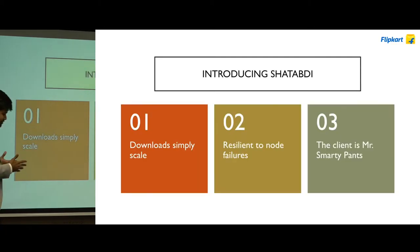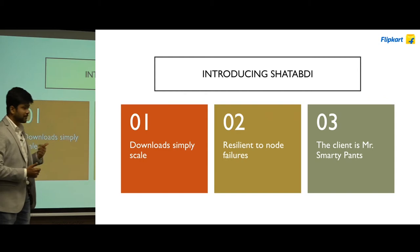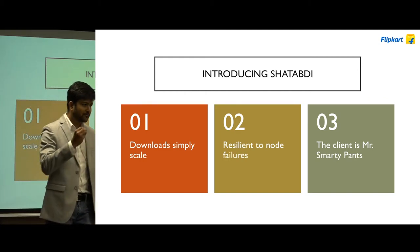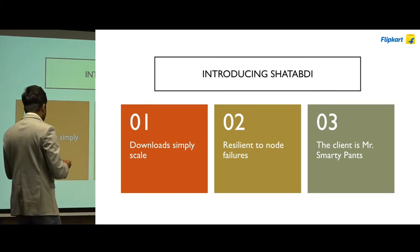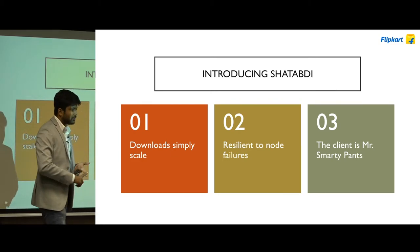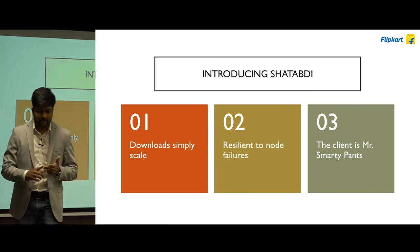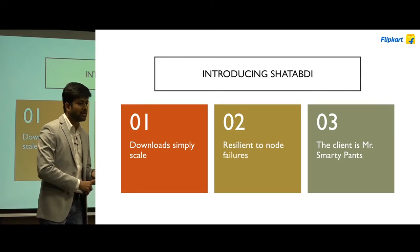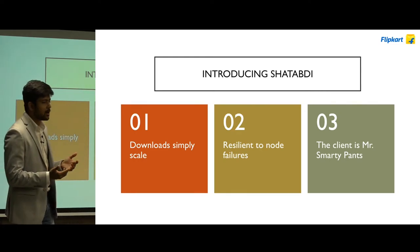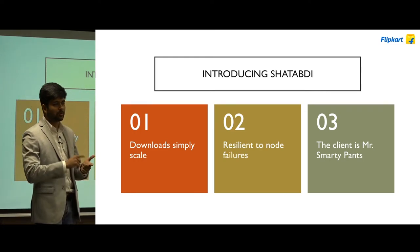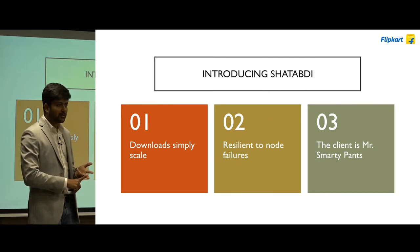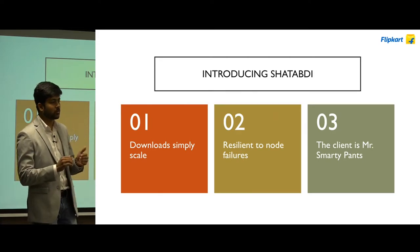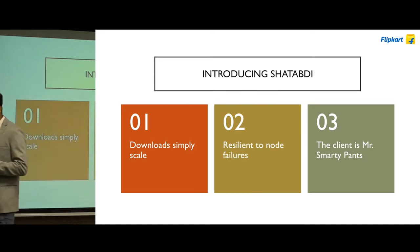So I'd like to introduce Shatabdi — the name of the system we built to solve this problem, tailor-made for fixing deployments in Flipkart. Download simply scales. We don't worry anymore about whether we're deploying a 100-node, 500-node, or 1000-node cluster and whether our source is going to get choked. We do not scale or modify the source. We just hand over the download operation to Shatabdi and it internally figures out what to do.